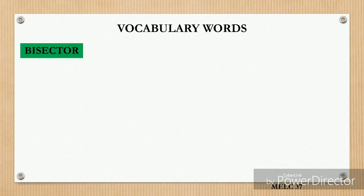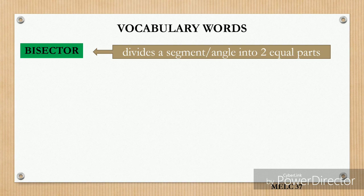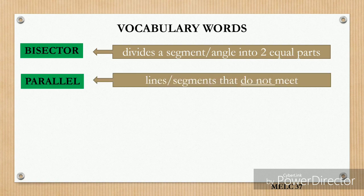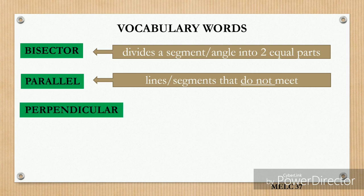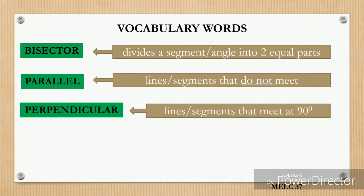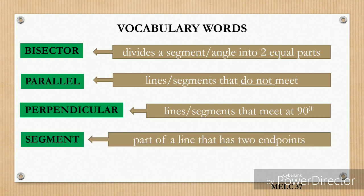First is the bisector — that means it divides a segment or angle into two equal parts. Parallel means a line or lines and segments that do not meet. And perpendicular means lines that meet at 90 degrees. And segment refers to part of a line that has two endpoints.